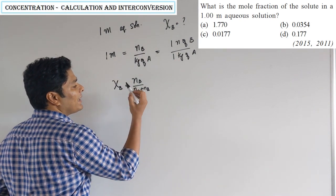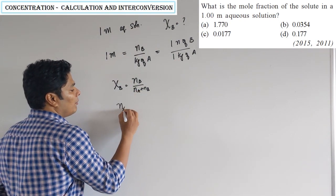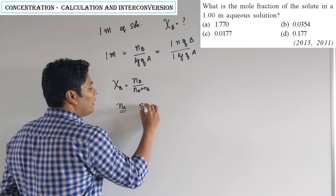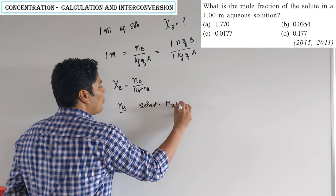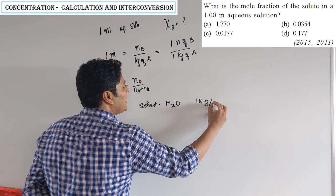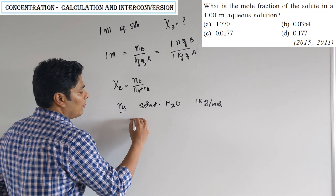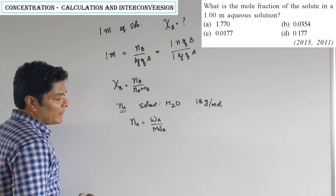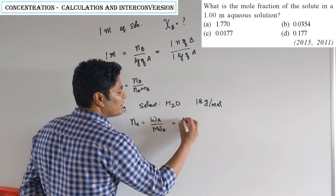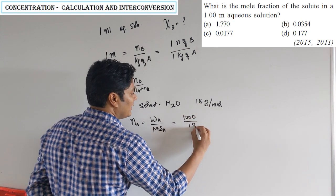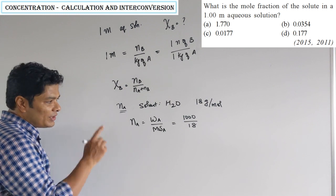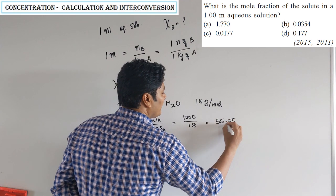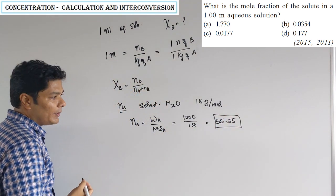I have moles B, so I need to calculate moles A. Moles of A equals mass of A divided by molar mass of A. Since this is an aqueous solution, the solvent is water with molar mass 18 g/mol. So moles of A = 1000 divided by 18, which equals 55.55. This number you want to know — it is a repetitive value: 55.55.